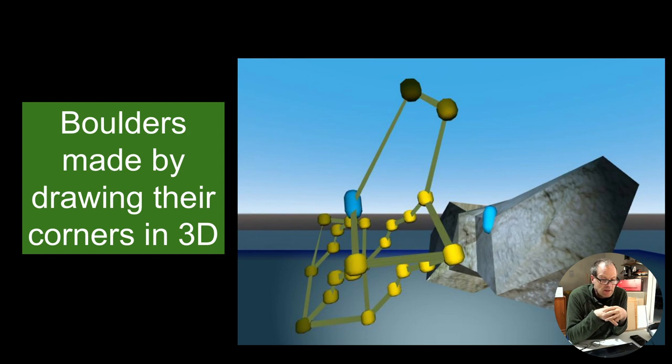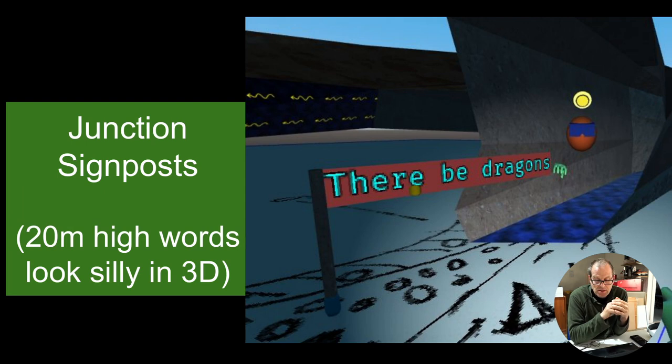There's boulders that can also be sketched out in any kind of network of points. You can make a crinkly boulder or something that's the shape of a gour pool or whatever you find. We've got signs on some of the places because you don't want to put gigantic signs like you do in 2D. You have to put little signs which you can see when you go around them, like roadsides.